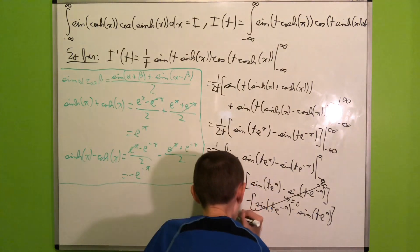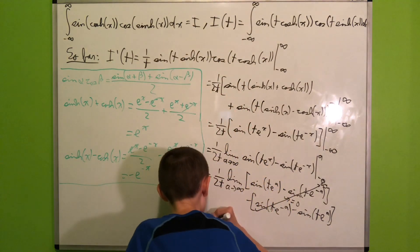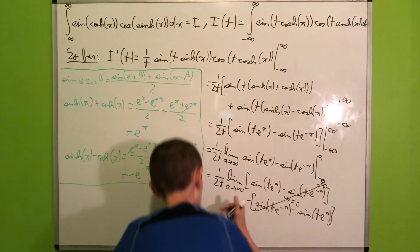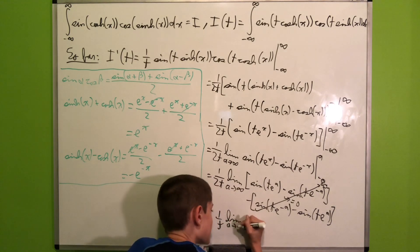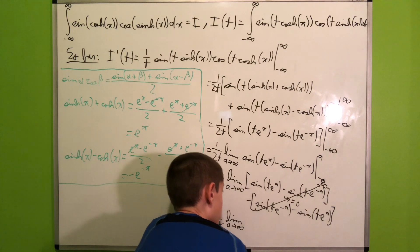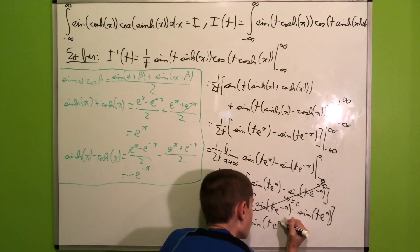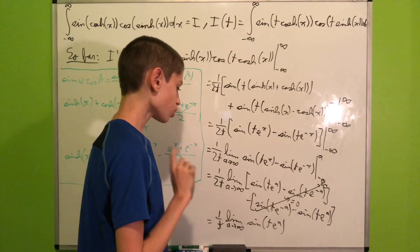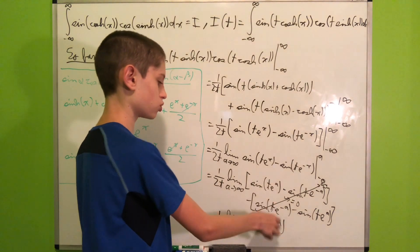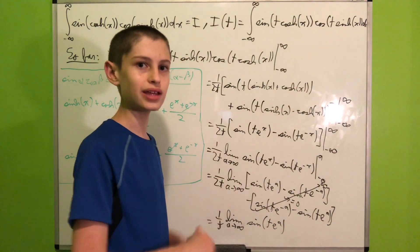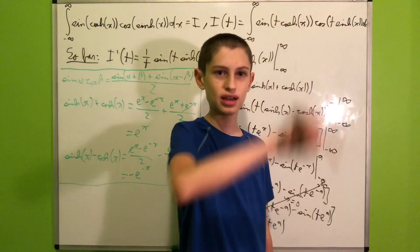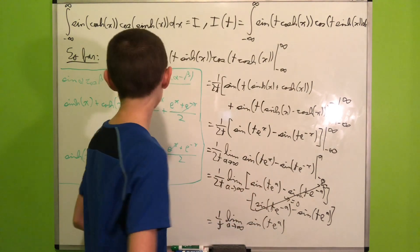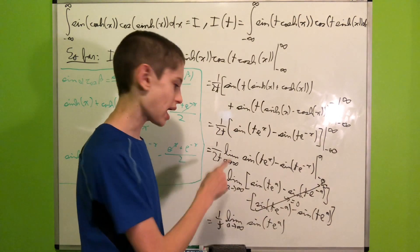So we have (1/t) times the limit as a → ∞ of sinh(t·e^a). But as a → ∞, e^a → ∞, and sine oscillates between −1 and 1, so this limit doesn't exist in the classical sense. It seems we have a problem — but no problem. We'll proceed by writing our original I as a definite integral involving I'(t).